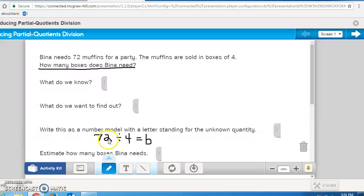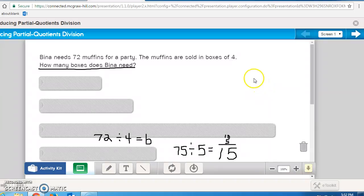And finally, estimate how many boxes Bina will need. Well, 72 is close to 75, and 4 is close to the number 5, and I know that if I take 5 times 10, that's 50, and 50 from 75 is 25, and 5 times 5 is 25. So my answer is 15 for an estimation.